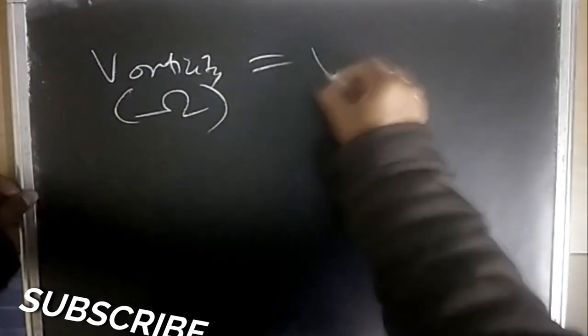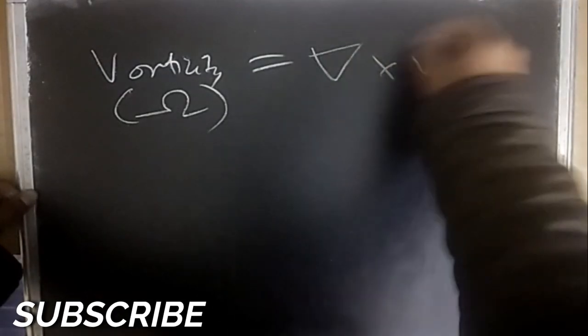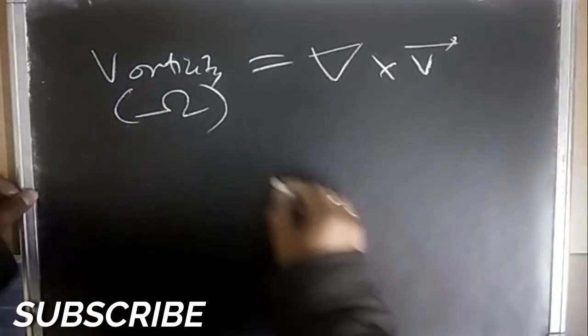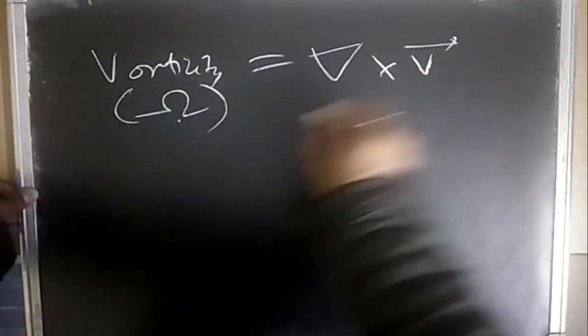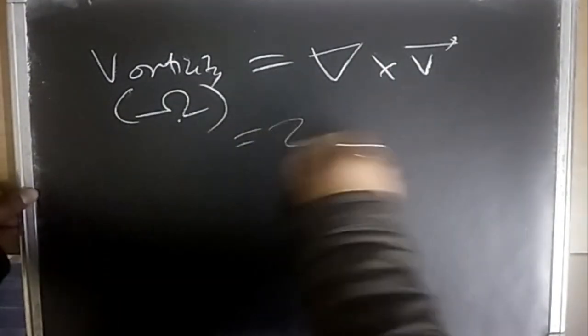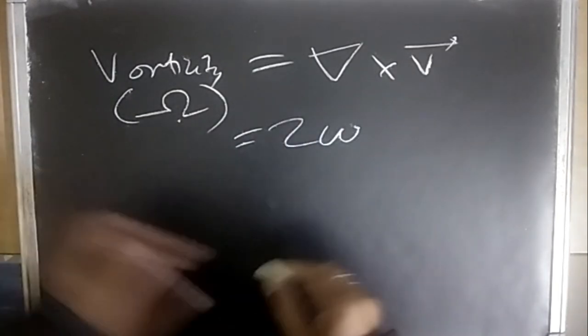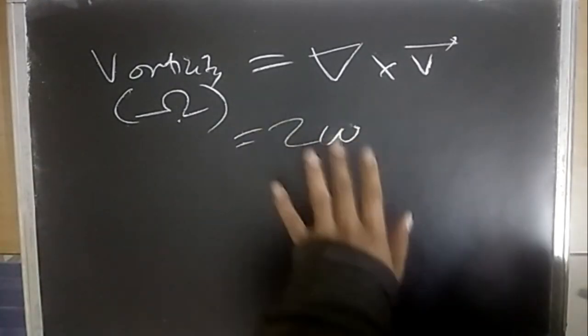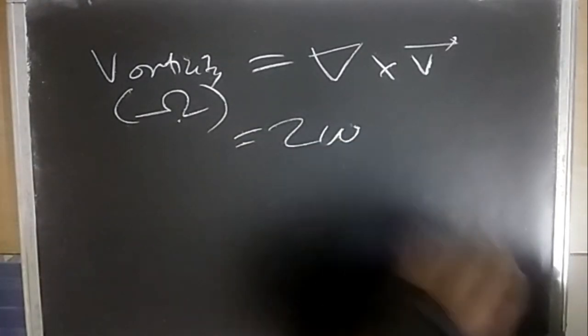Vorticity, denoted by sigma (ζ), is equal to ∇×v, and it is equal to 2ω, where ω is the angular velocity.